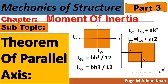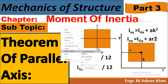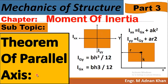Hello guys, welcome back to my YouTube channel Being Engineer. This is Part 3 of Chapter Moment of Inertia. Today's subtopic is the Theorem of Parallel Axis, which is the most important theorem to calculate the moment of inertia of two-dimensional objects — such as a rectangle, square, circle, triangle, or any composite figures comprising squares or rectangles. Let's start our today's topic.